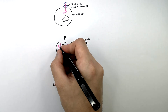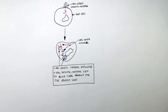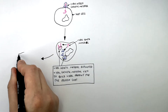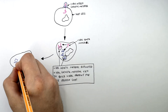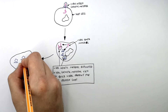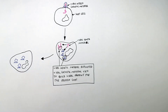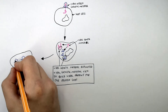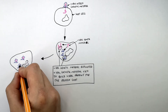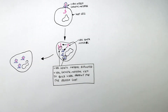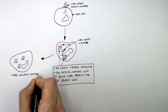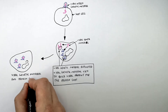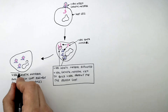Remember, the viral genetic material is also replicated. To make new viruses, the virus is assembled — the genetic material assembles inside the protein coat. This forms new viruses as the viral genetic material and protein coat combine.